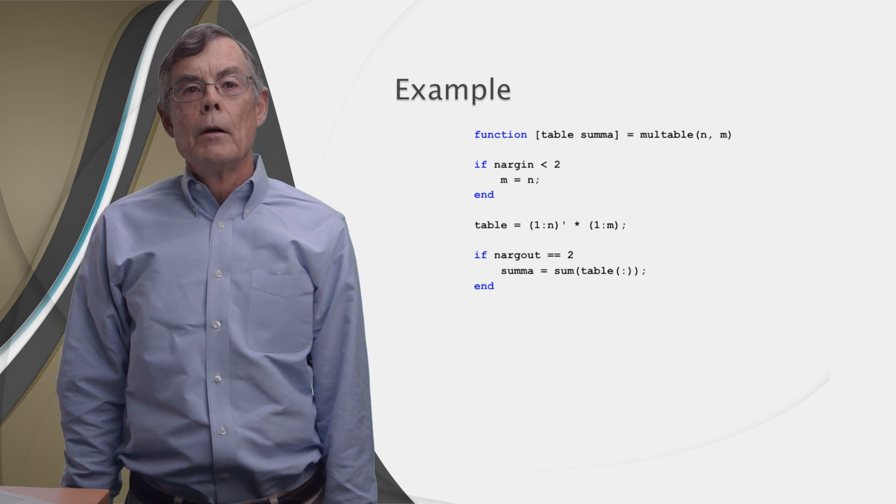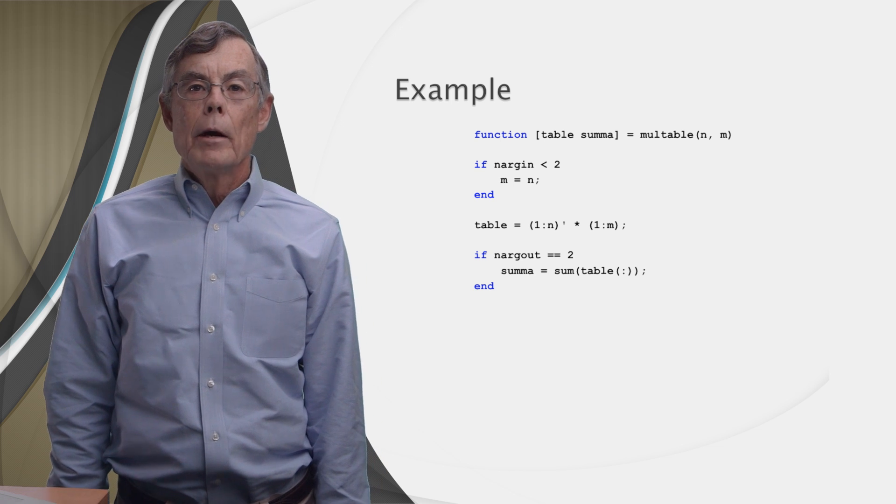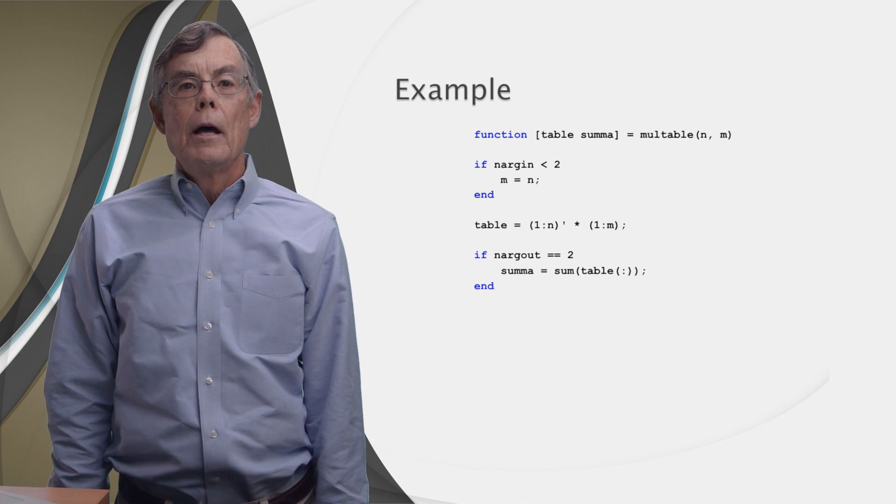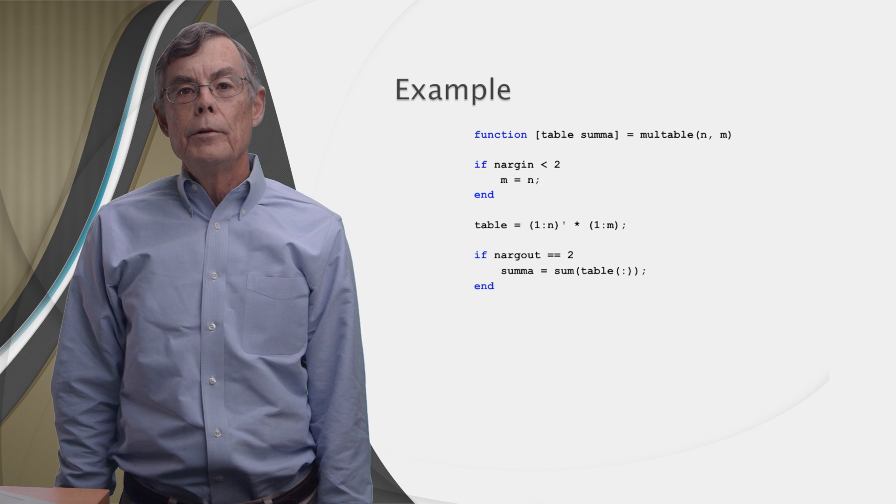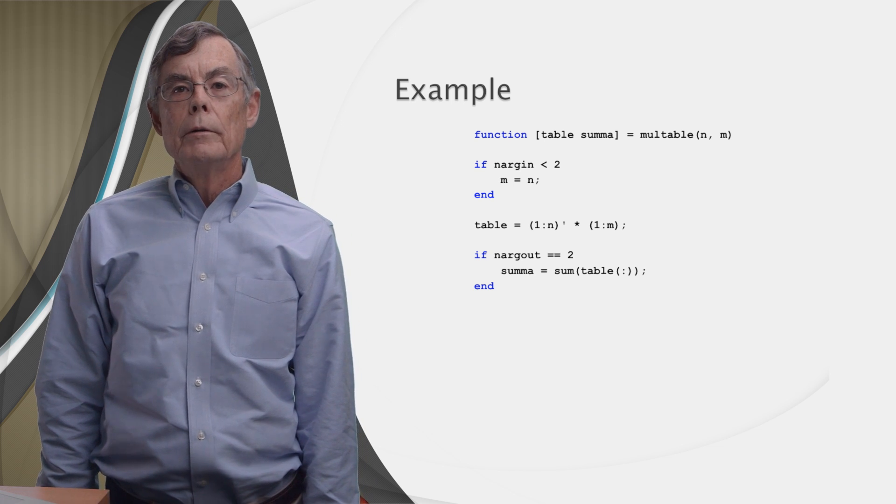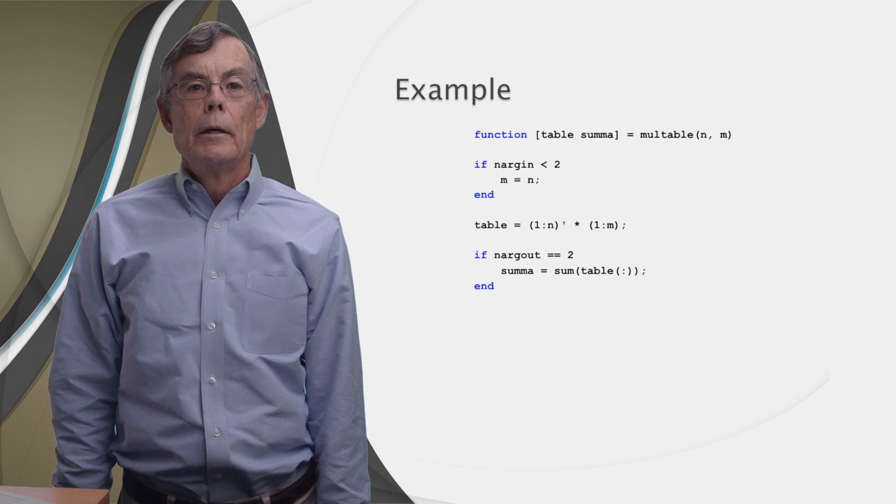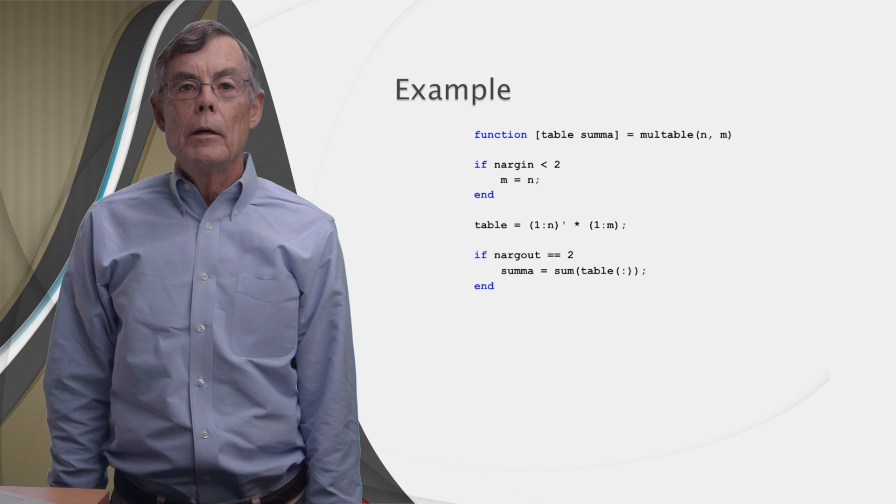Well, that's not what we want. So here, we use the colon argument to create a vector from all the elements of the table. That's done with a colon. And then we sum and give that to sum and it'll add them all up.